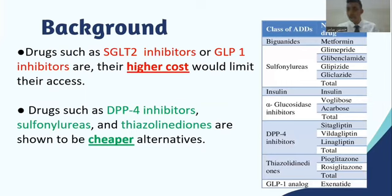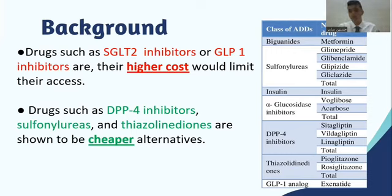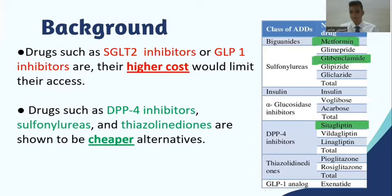Clinically, when considering second-line treatment for DM patients based on comorbidities and adverse effects, this pharmacoeconomic article considers dipeptidyl peptidase-4 (DPP-4) inhibitors and sulfonylureas as cheaper alternatives. Sodium-glucose co-transporter 2 inhibitors and glucagon-like peptide-1 inhibitors were not included because they are associated with higher costs.